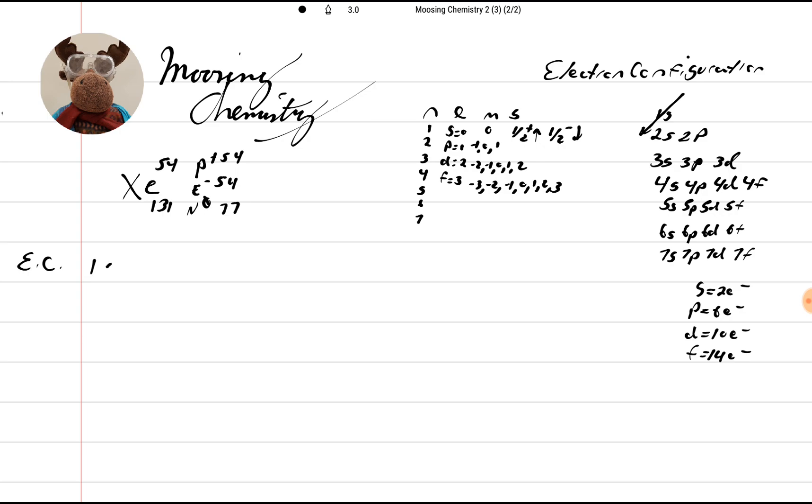We go 1S2, and we put our two electrons in. Then we do 2S2, then we're going to do 2P6, 3S2. And then we go 3P6, 4S2. Then we're going to do 3D10, 4P6.